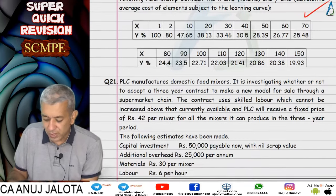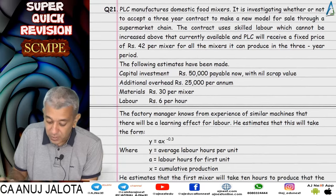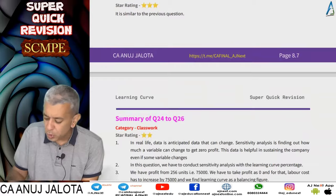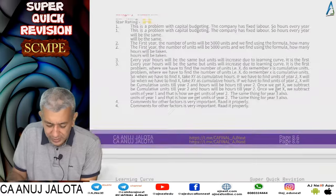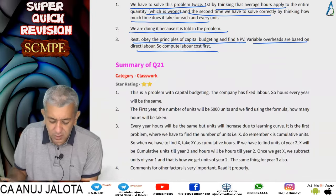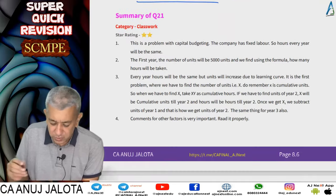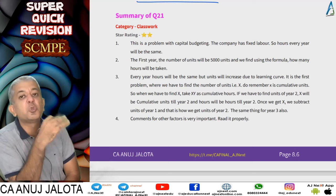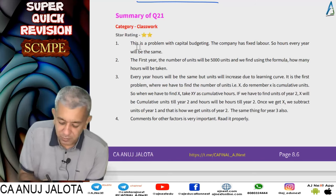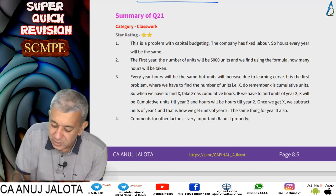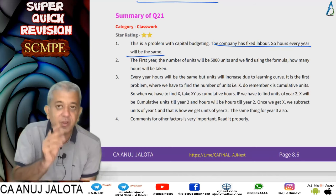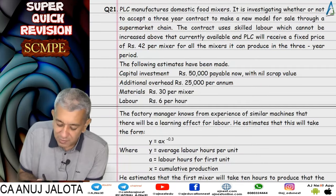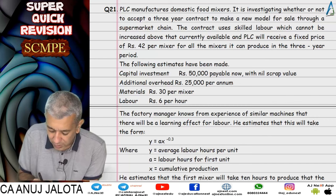Question 21 was the best question of the chapter and received a 2-star rating — it is very good. Here you have to find the value of x (cumulative number of units). It is a capital budgeting problem where the company has a fixed amount of labor, so hours every year remain the same. The formula used is xy = ax^(b+1) where b+1 equals 0.7 in this question, and a equals 10.